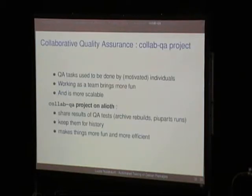QA tasks used to be done by motivated individuals. Some people talk about a QA team, but there's really not a big active QA team like, for example, the KDE team. I think that working as a team would help a lot — it would bring more fun, and it's more scalable, which is really important when you have to take care of 13,000 packages. There's a project on Alioth called Collab QA which can be used to share results about QA tests, like rebuilds of the archive or runs of piuparts, and to keep results for history — which is important so you can get an idea of how the quality of Debian evolves. It makes things much more fun and efficient than before.